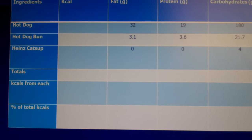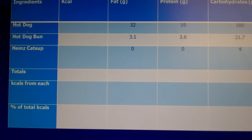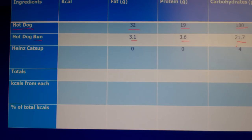We have an example here, and this example is going to look a lot like your homework. This is a hot dog on a bun with ketchup instead of a peanut butter and jelly sandwich, but it's the exact same kind of idea. A hot dog itself has 32 grams of fat, 19 grams of protein, and 180 grams of carbohydrates. A hot dog bun has 3.1 grams of fat, 3.6 grams of protein, and 21.7 grams of carbohydrates.